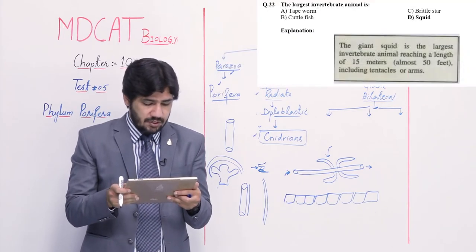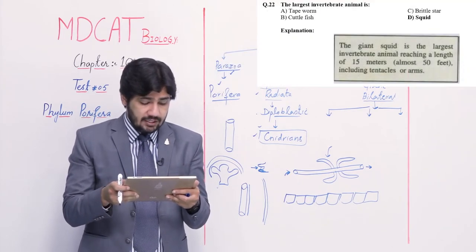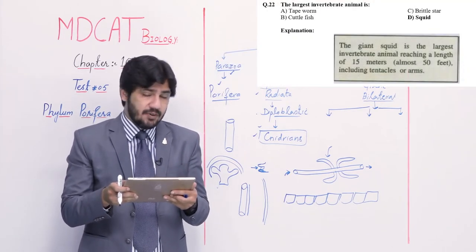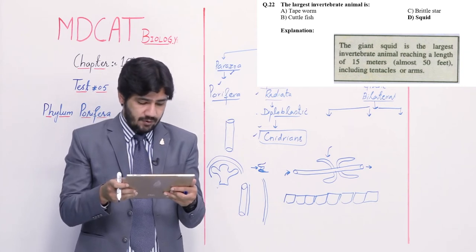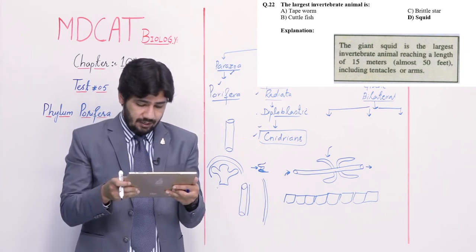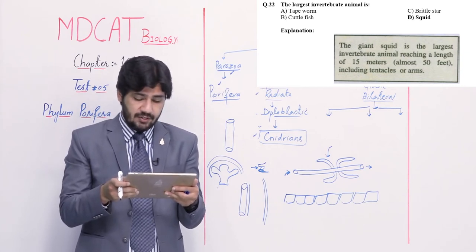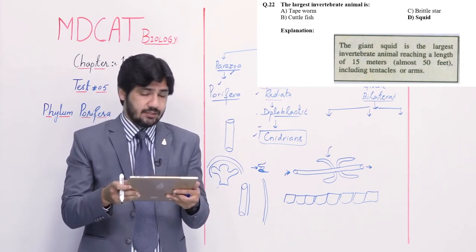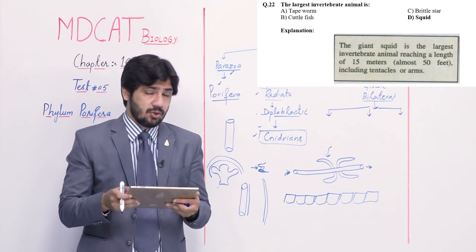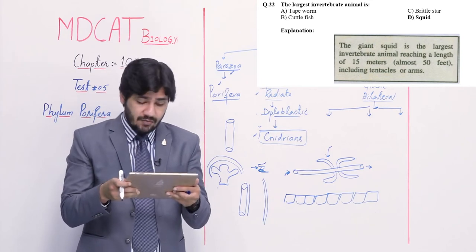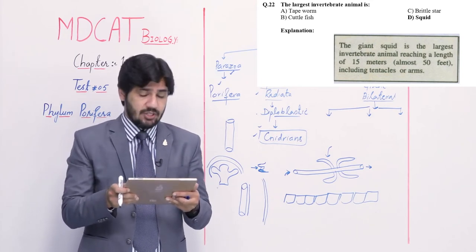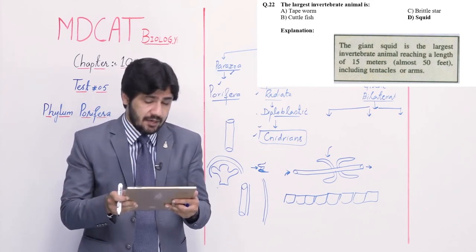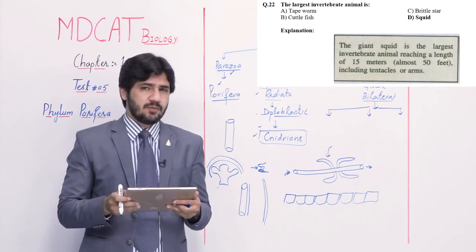Question number 22: the largest invertebrate animal is — alpha tapeworm, beta cuttlefish, charlie brittle star, and delta squid. The largest invertebrate is squid, with length up to 15 meters. Right option is delta.